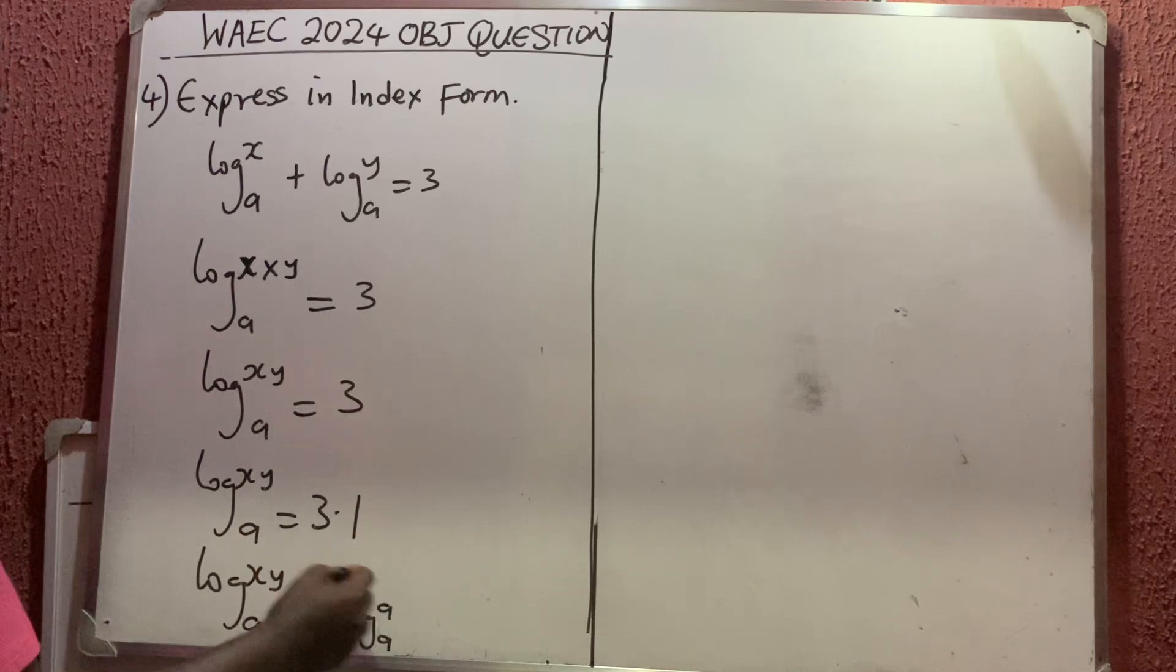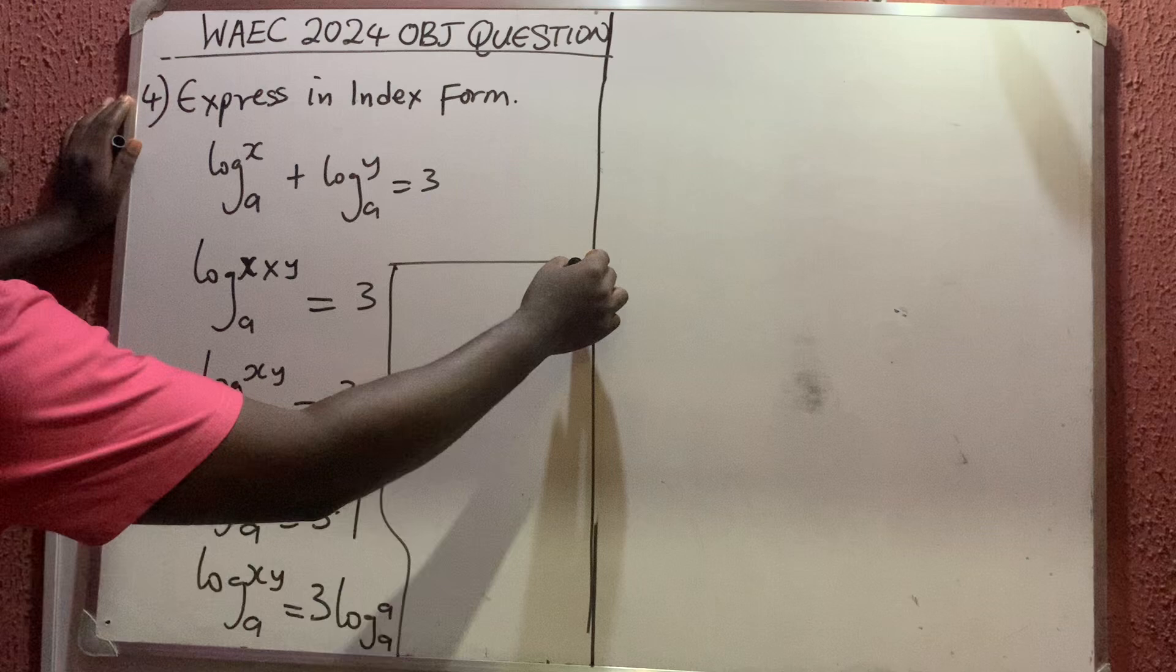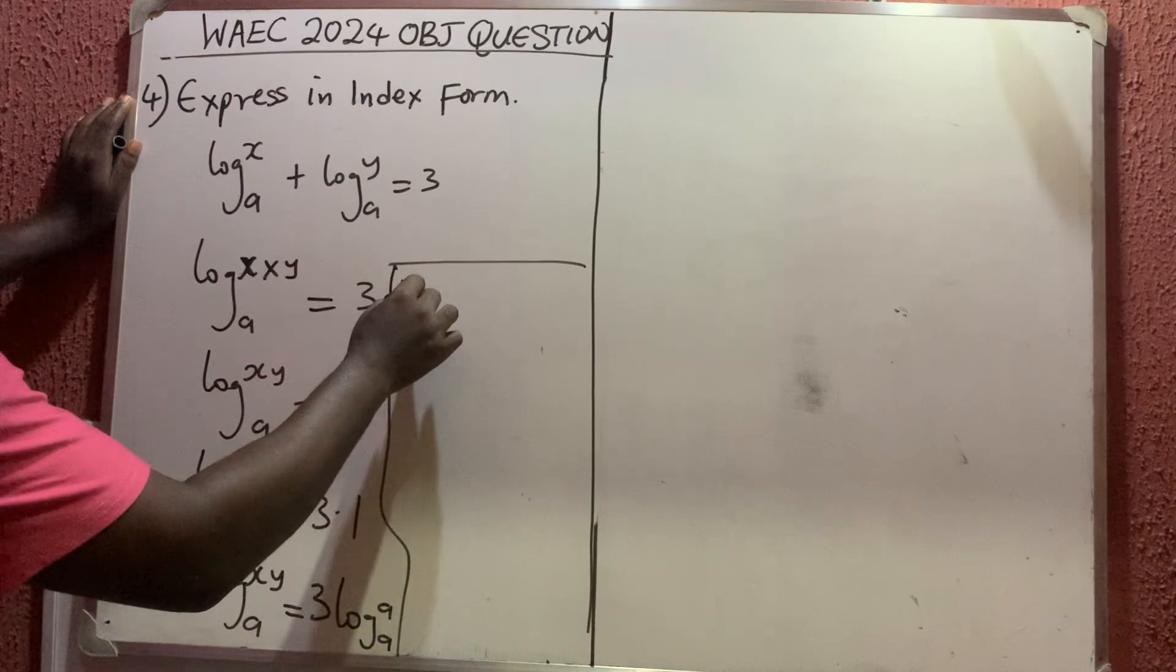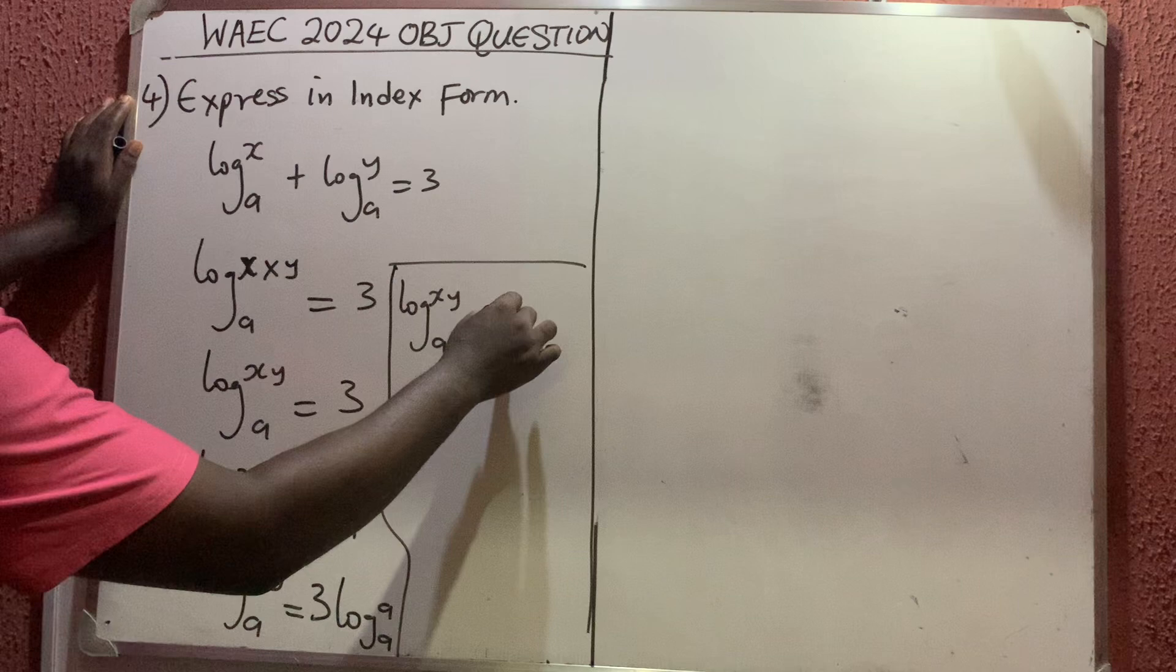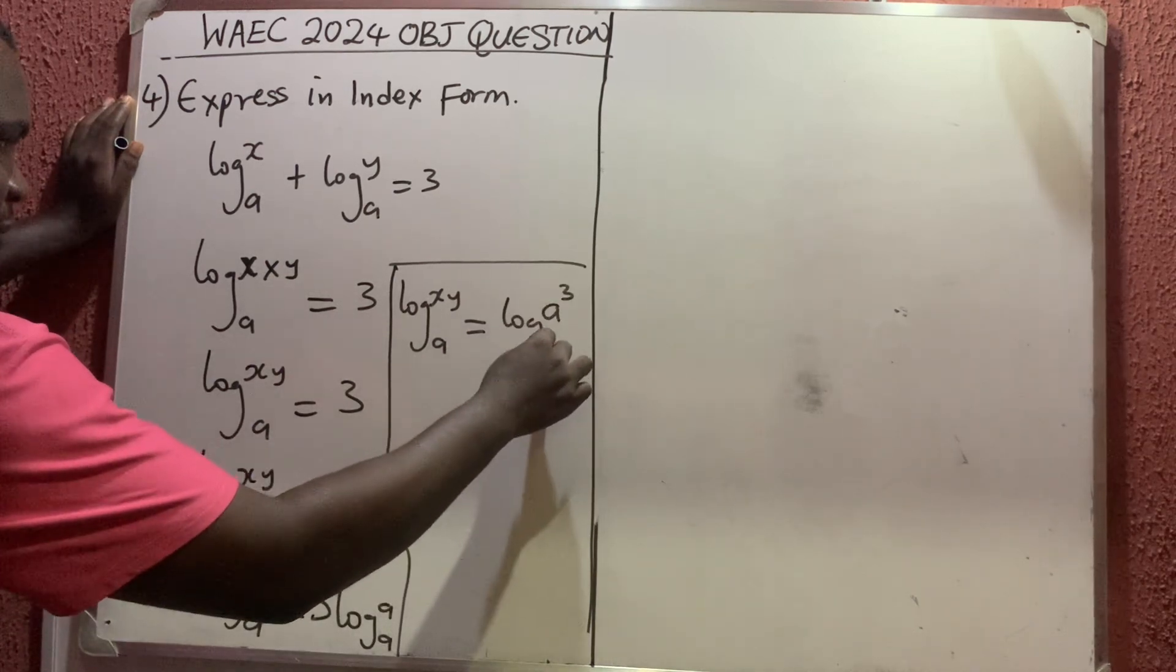Now the next thing you should know about logarithms is that when we have a coefficient here, this coefficient can go to become the power. So I'm going to have that this is log xy base a equals log a raised to power 3 base a. Like I said, this 3 will come over and become the power.